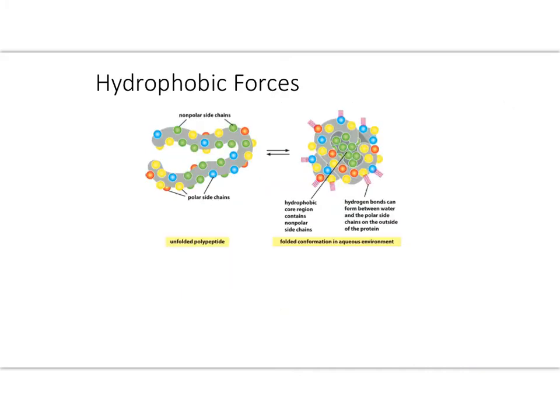Now on to the last of the non-covalent interactions, and that's the hydrophobic forces. And basically, now on this particular diagram again, in gray you're going to see the backbone of the polypeptide chains. Now we're zooming out a little bit so we can see the different side chains, and they're just color-coded. Same color coding that we saw on our last videos. And basically, the non-polar side chains are shown in green.